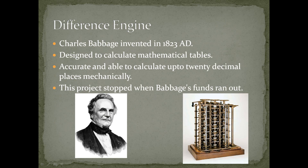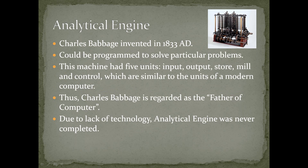The difference engine was invented by Charles Babbage in 1823 A.D. It was designed to calculate mathematical tables accurately and was able to calculate up to 20 decimal places mechanically. However, this project stopped when Babbage's funds ran out.